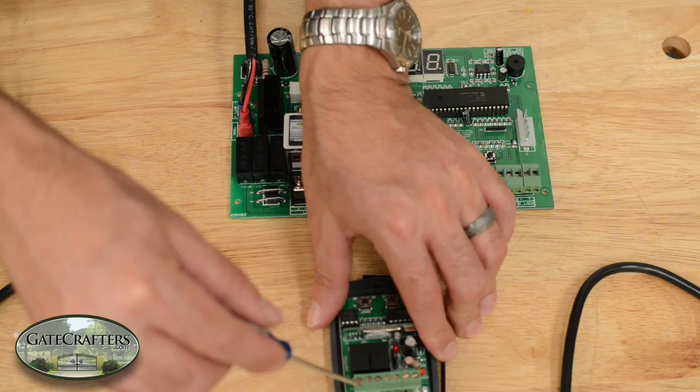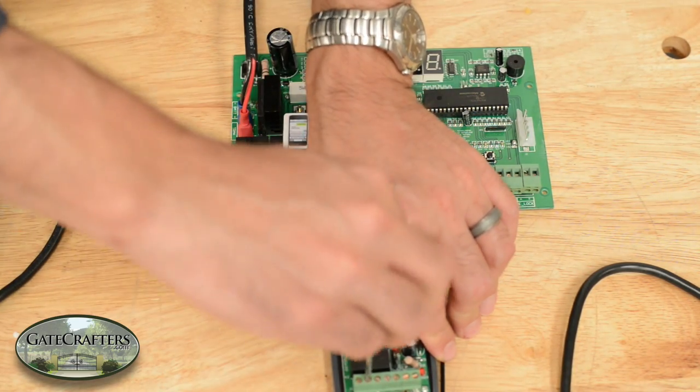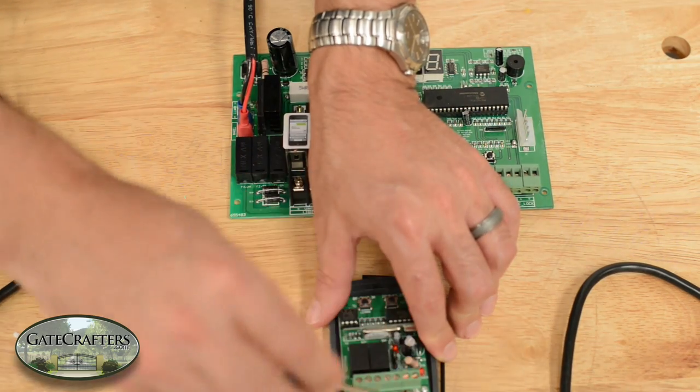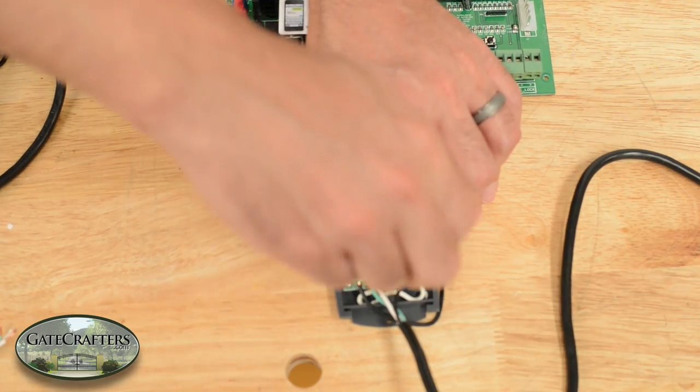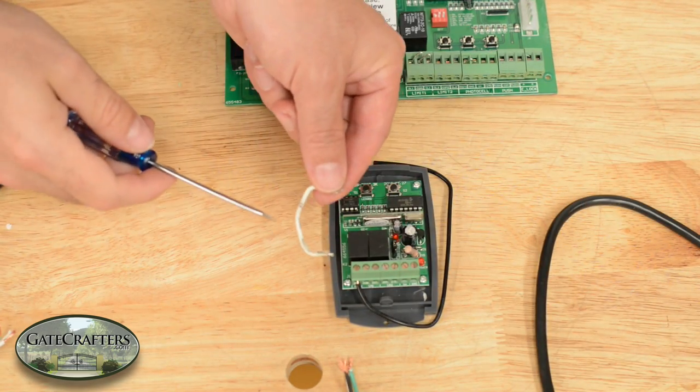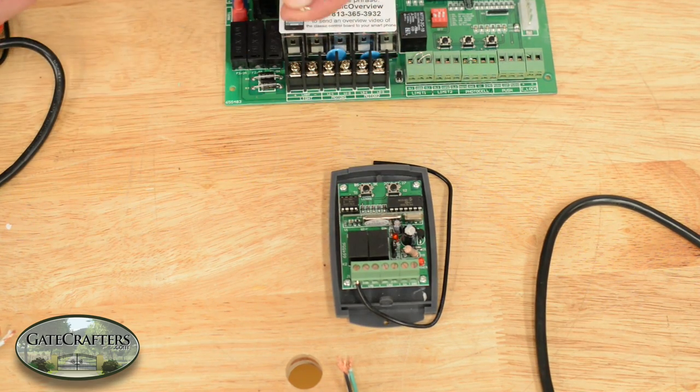Remove all the wires from the receiver, including the bottom jumper wire. The only wire we are going to leave in is the antenna. It is very important to remove this jumper wire when wiring in the accessory terminals on the bottom.